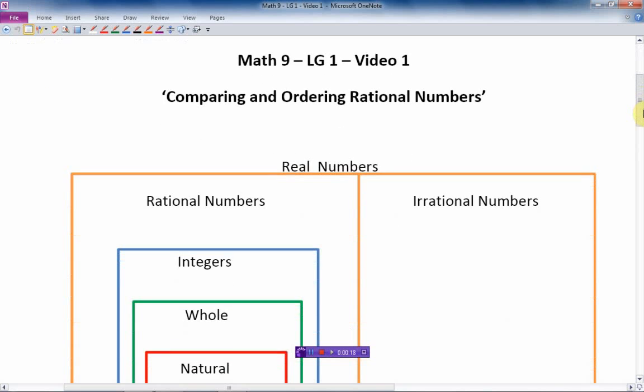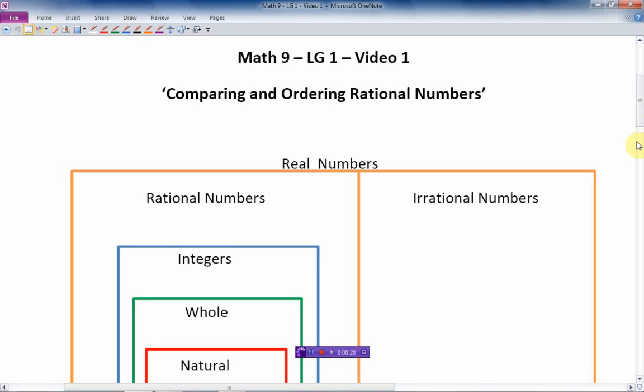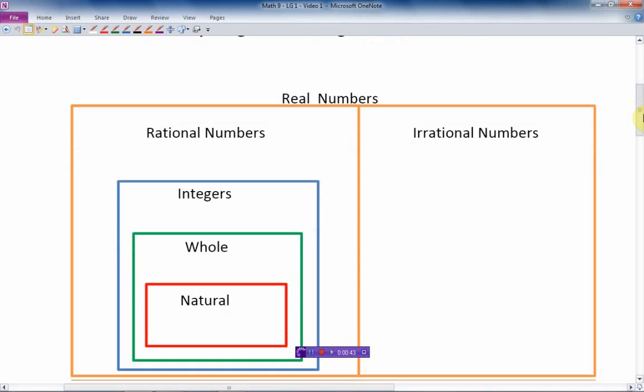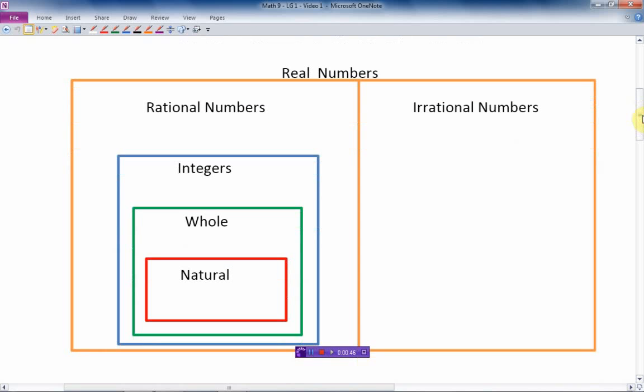So first of all, I think we should begin with talking about what rational numbers are and how they fit in the whole picture of things. Generally speaking, in grade school, we learn about real numbers. There is another complete set of numbers called imaginary numbers, but we don't usually hit those until maybe grade 12 or even later. So the real numbers that we're going to focus on in high school and elementary school are divided into two sections: rational numbers and irrational numbers.